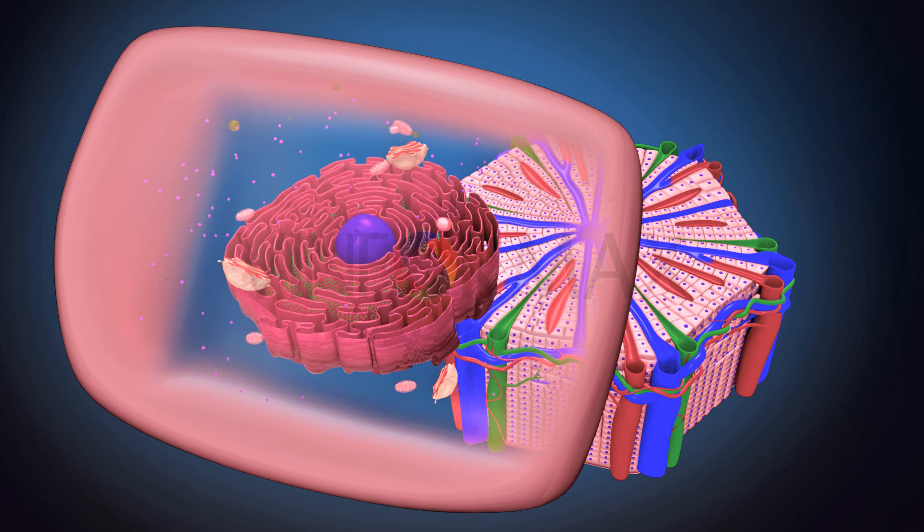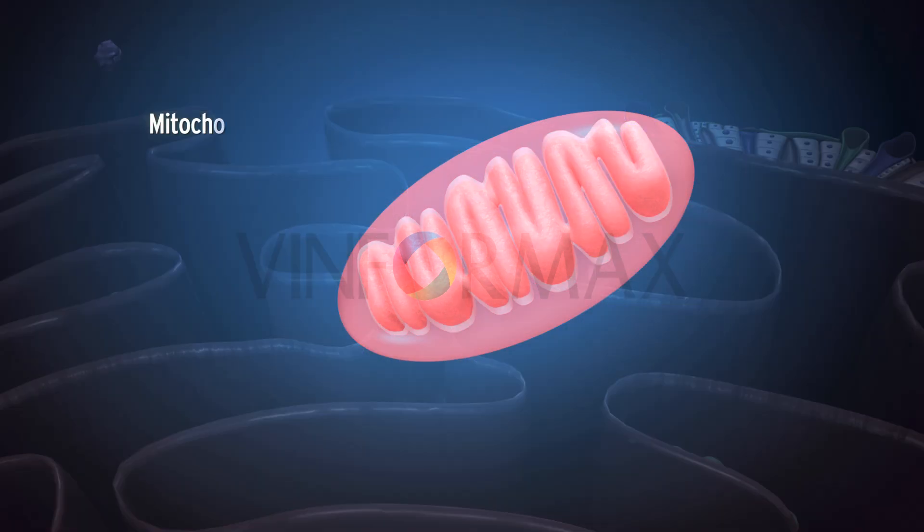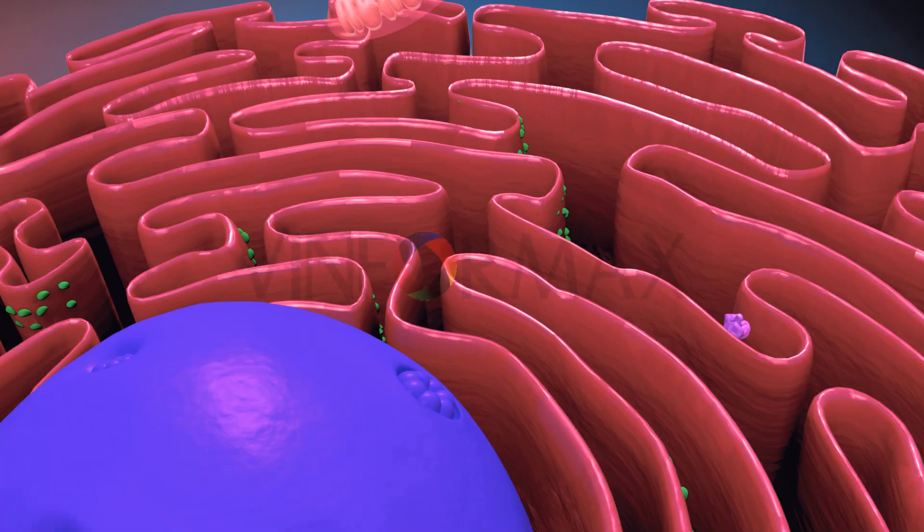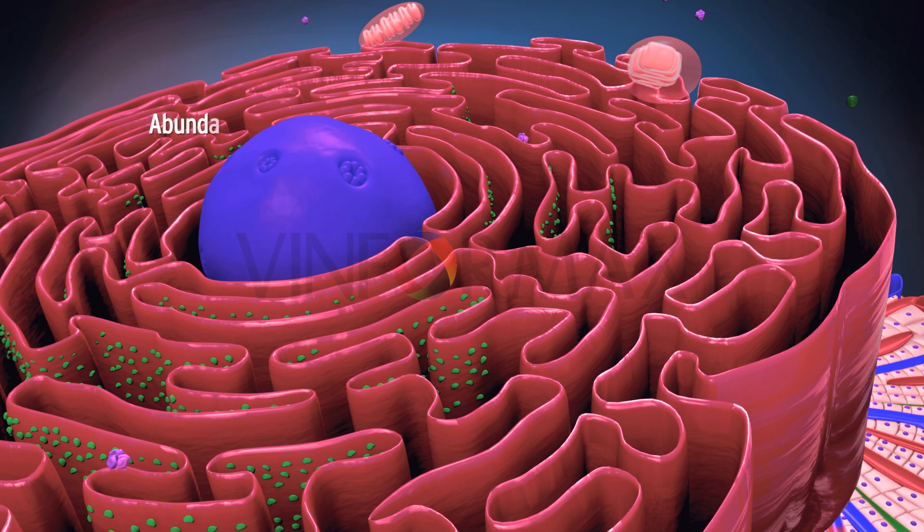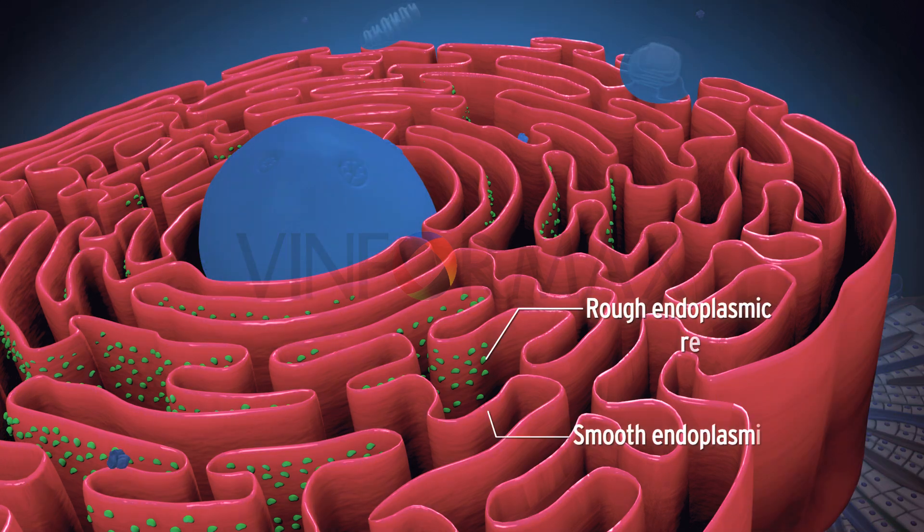Hepatocytes are highly active cells. Each hepatocyte contains numerous mitochondria and abundant rough and smooth endoplasmic reticulum.